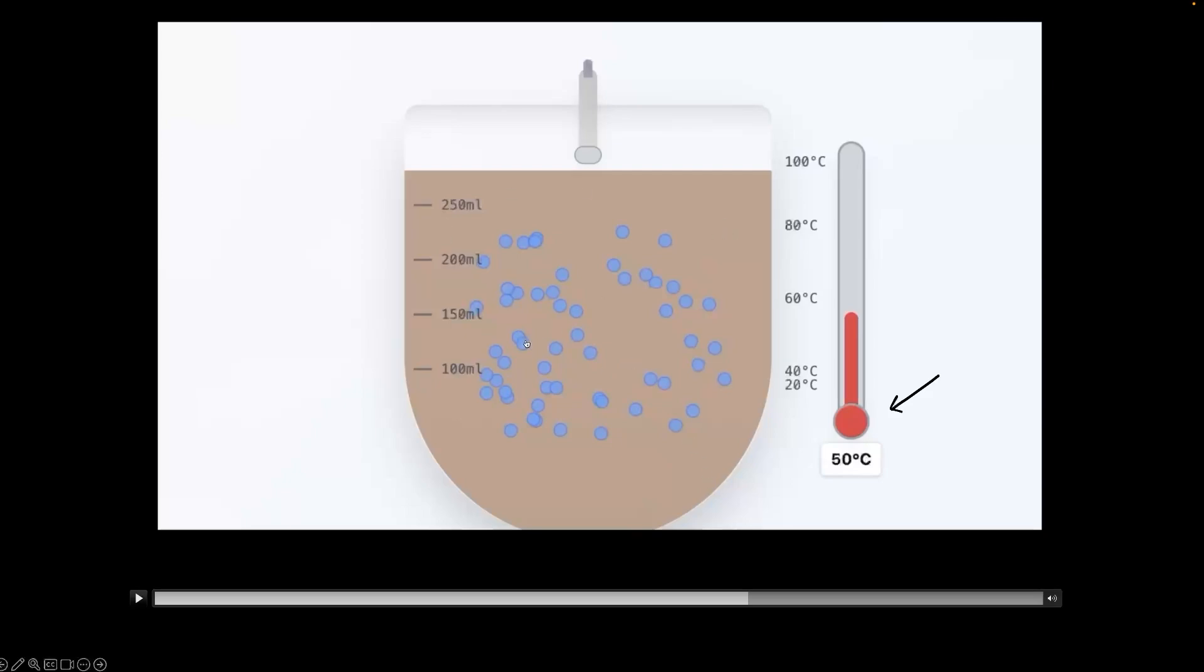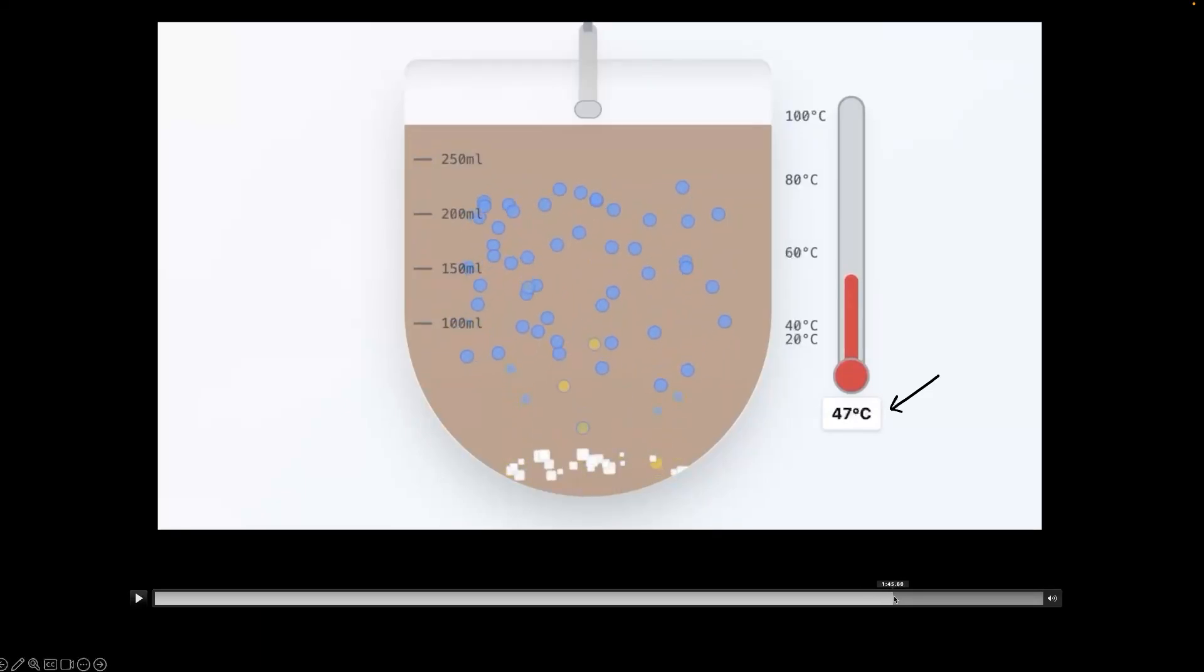So at this point, we reached saturation yet again, where all the sugar is dissolved and nothing is left in the crystal form. And if we now reduce the temperature back again, we'll see that the crystal will come back. So as we keep reducing, we'll have more and more crystals coming back.